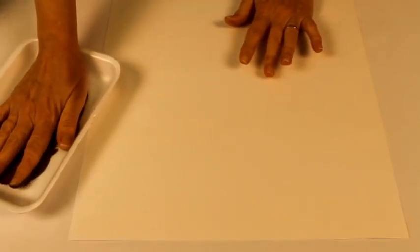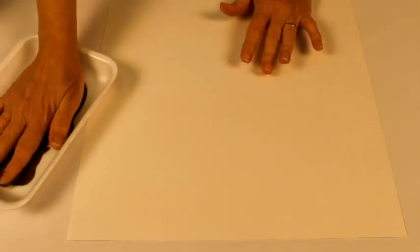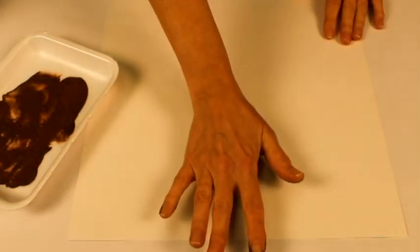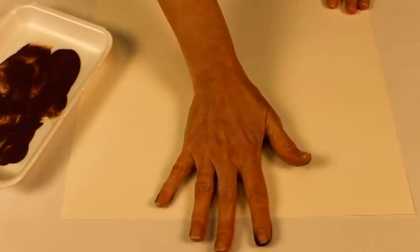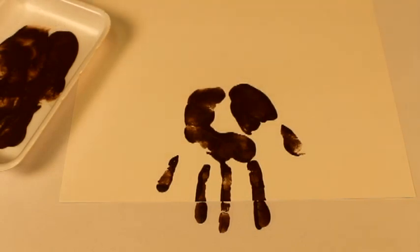Pour some brown paint in a tray and press your hand in the paint. Then press your hand on a sheet of paper with your fingers pointing towards the edge of the paper. Preferably, keep your fingers apart to form the roots of the tree.